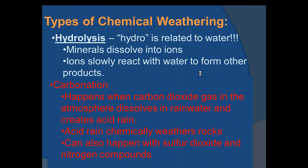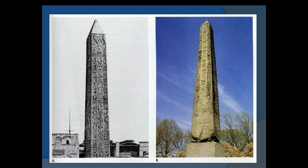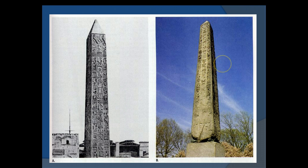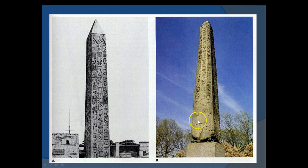Carbonation — think about carbonated beverages. Carbon dioxide gets into water, such as from rain or precipitation, making it acidic — acid rain. A good example is Cleopatra's Needle: it stood in Egypt for thousands of years with no problem, but after being brought to Central Park in New York City, acid rain from pollution — along with some physical weathering like ice wedging — chemically weathered it badly within just a few decades.